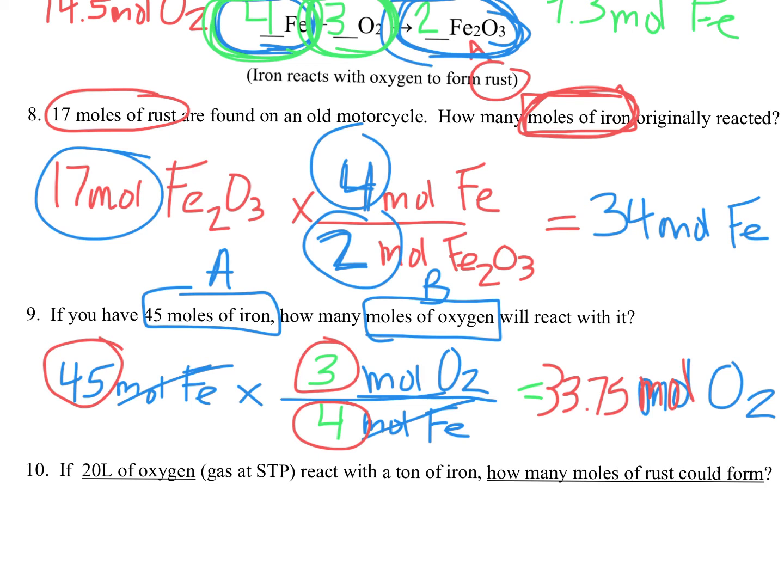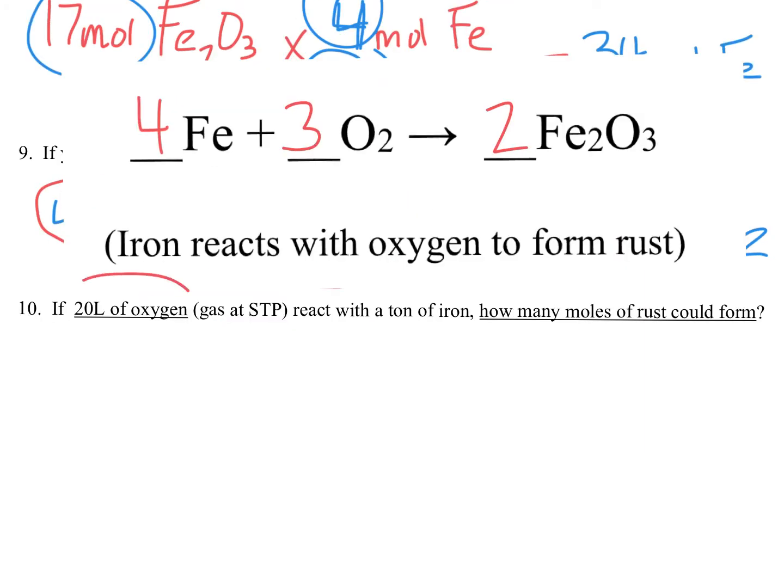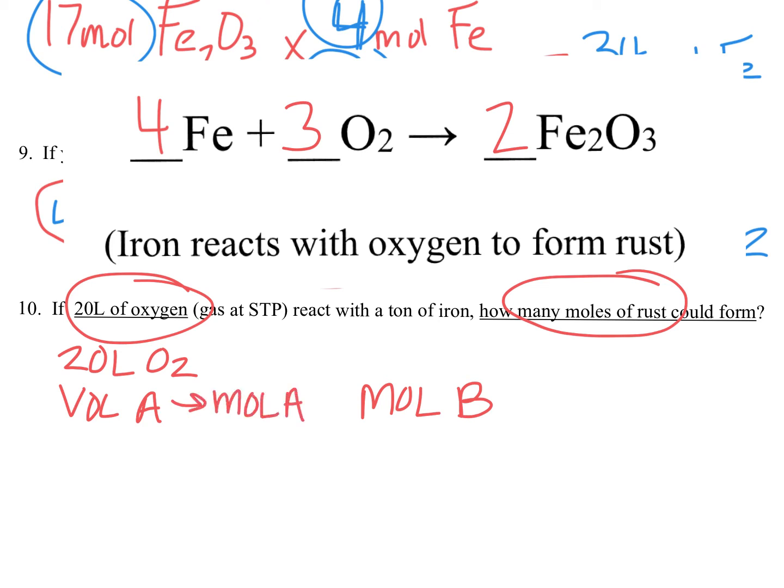Let's take the last one, which is one little extra step. We're going to need to use our mole map. Get ready. Back in action with the very last question. We have 20 liters of oxygen. 20 liters of oxygen is actually a volume. So we have volume of a substance. I'll call it volume A. And it's going to react with a ton of iron to figure out how many moles of rust. So eventually, we want to figure out moles of a different substance, B.